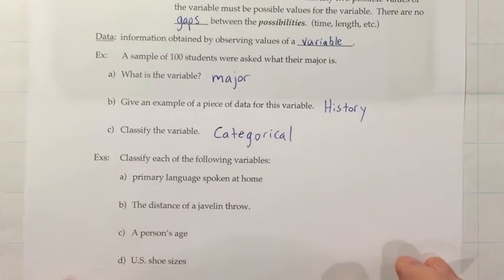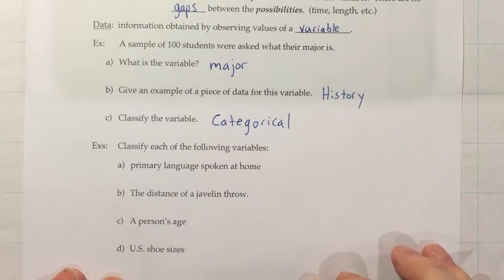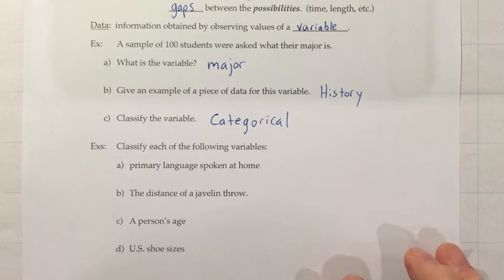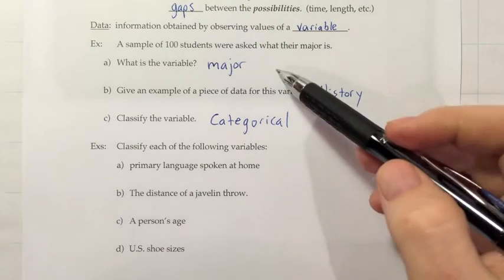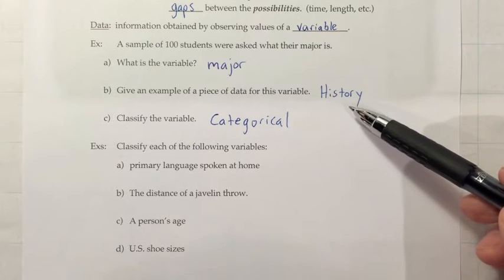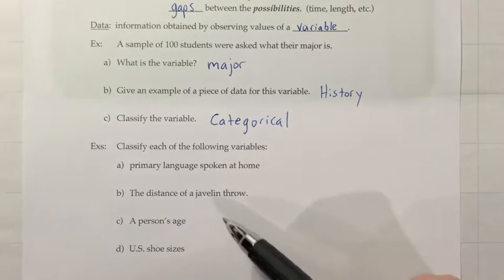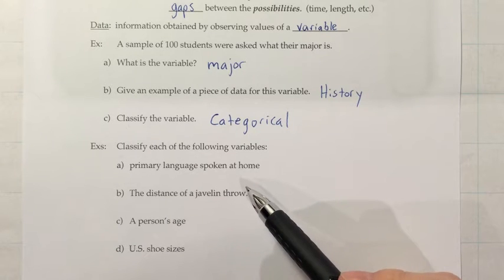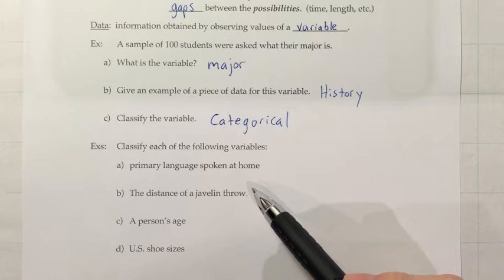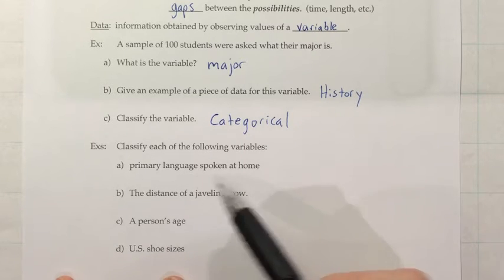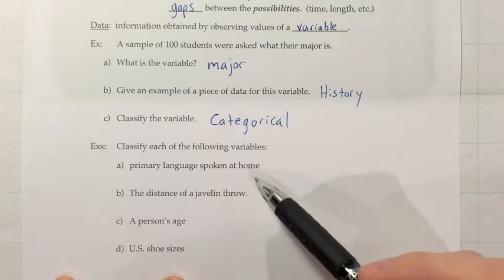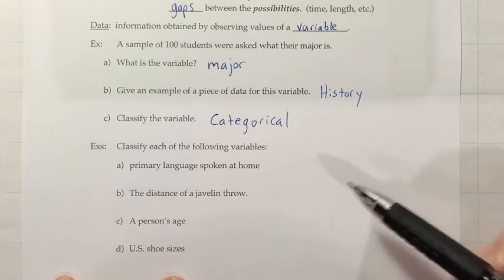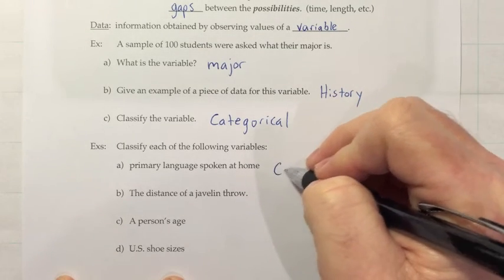So, a lot of times, when you're doing homework or maybe possibly on test questions and so on, they'll just ask you to classify the variable right away. And so, you'd still want to think about those first two things. What is the variable and what kind of data are you going to get? So, classify the primary language spoken at home. So, the variable is language. Somebody might answer English, Spanish, Chinese. So, depending on what kind of answer you get, in this case, word answers, you would say this one is categorical.